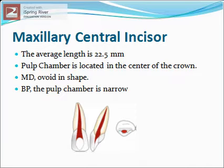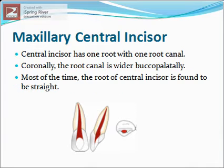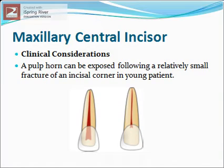Mesiodistally, the pulp chamber follows the outline of the crown and is ovoid in shape. Buccopalatally, the pulp chamber is narrow and joins the root canal with a constriction just apical to the cervix. The central incisor has one root with one root canal; coronally, the root canal is wider buccopalatally. Most of the time the root of the central incisor is found to be straight.